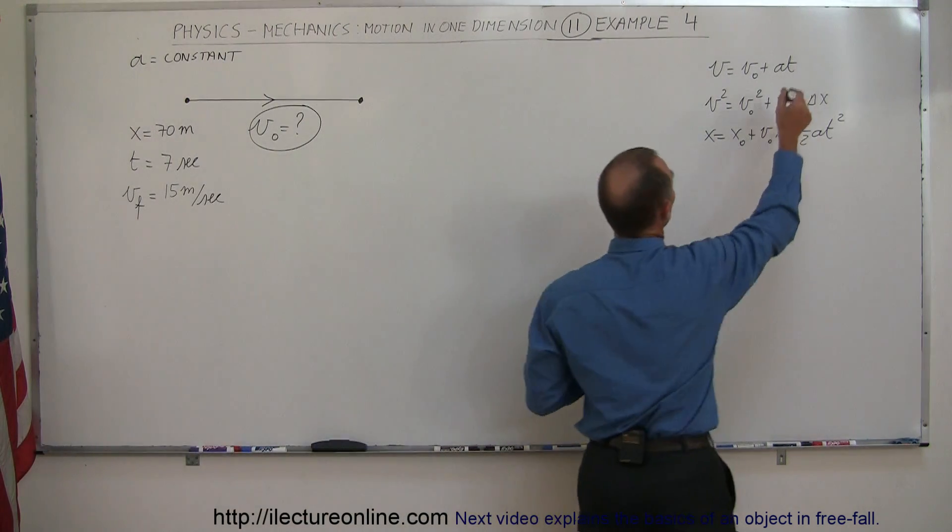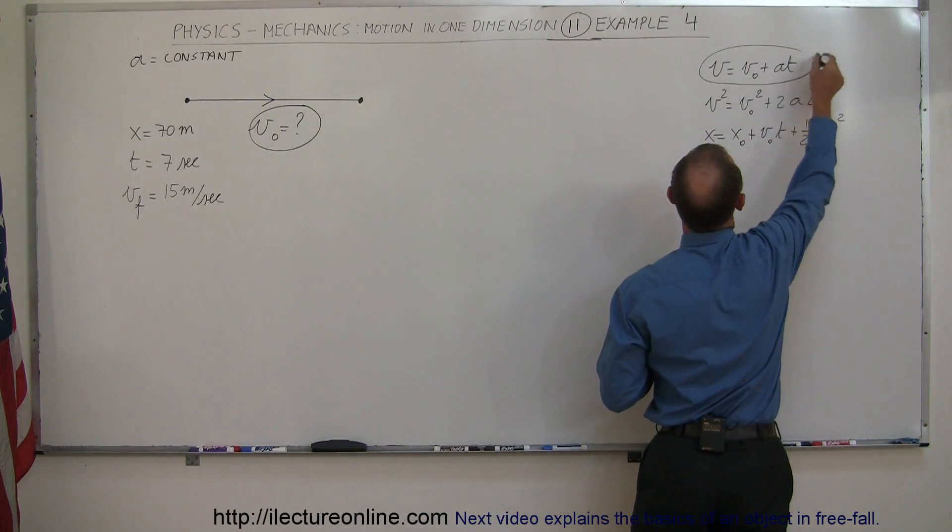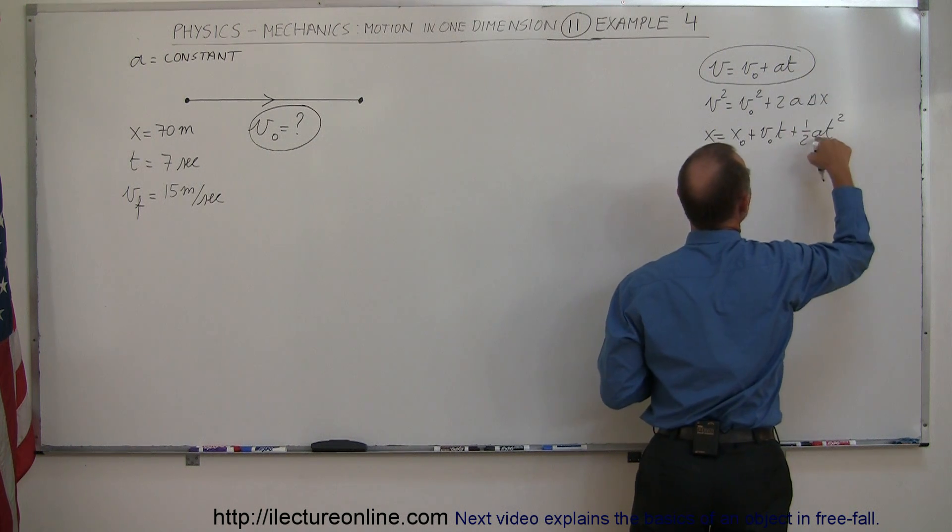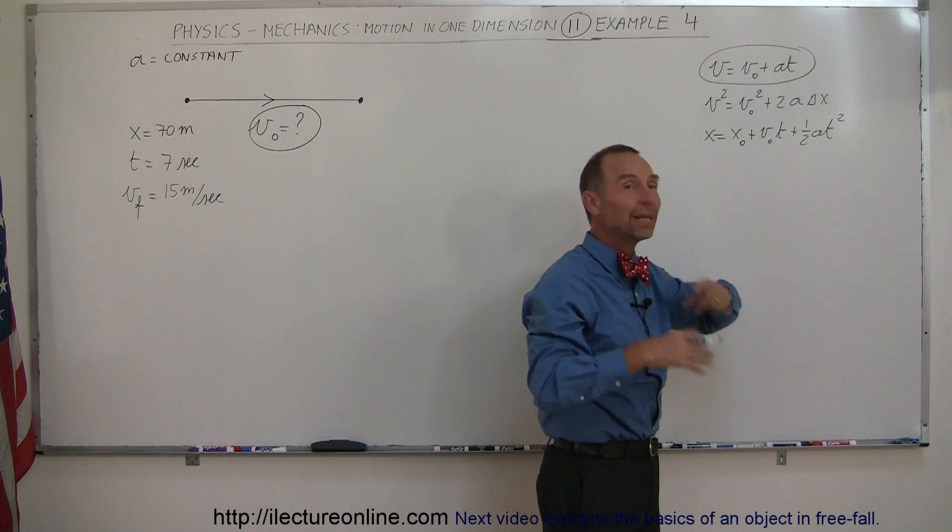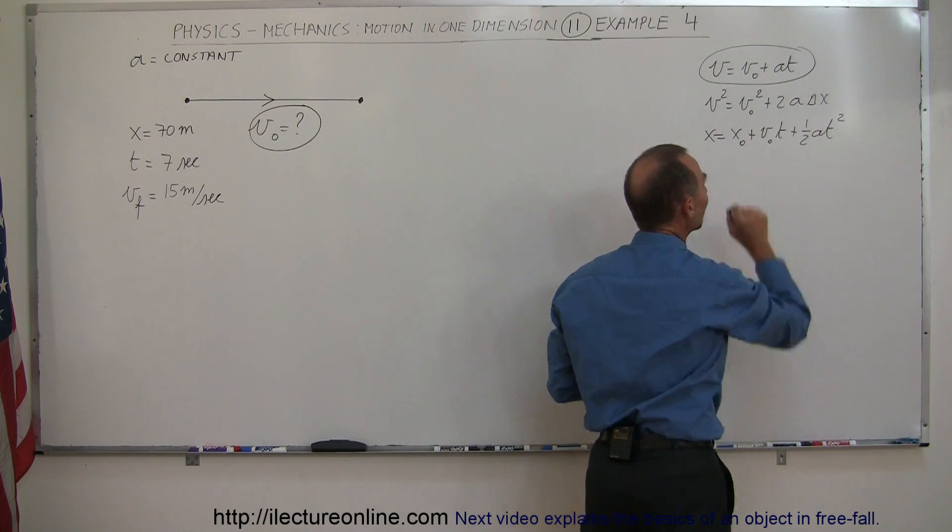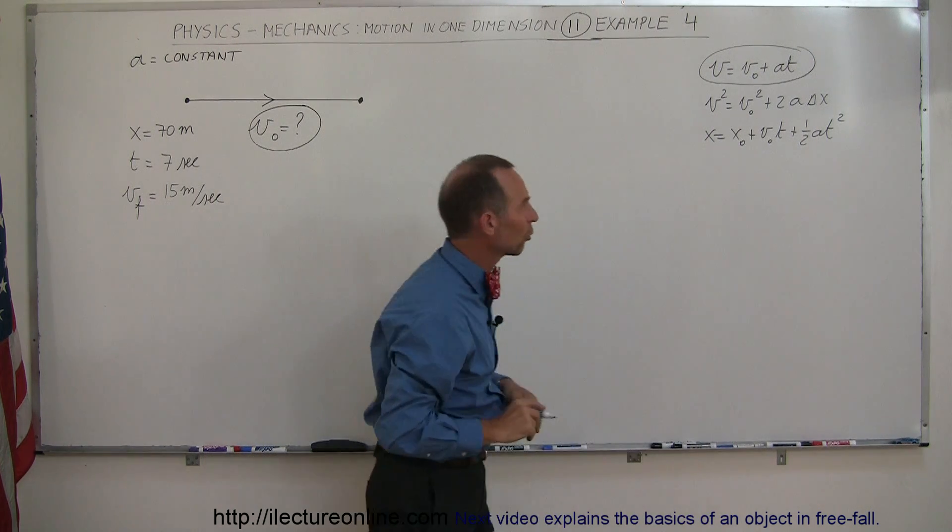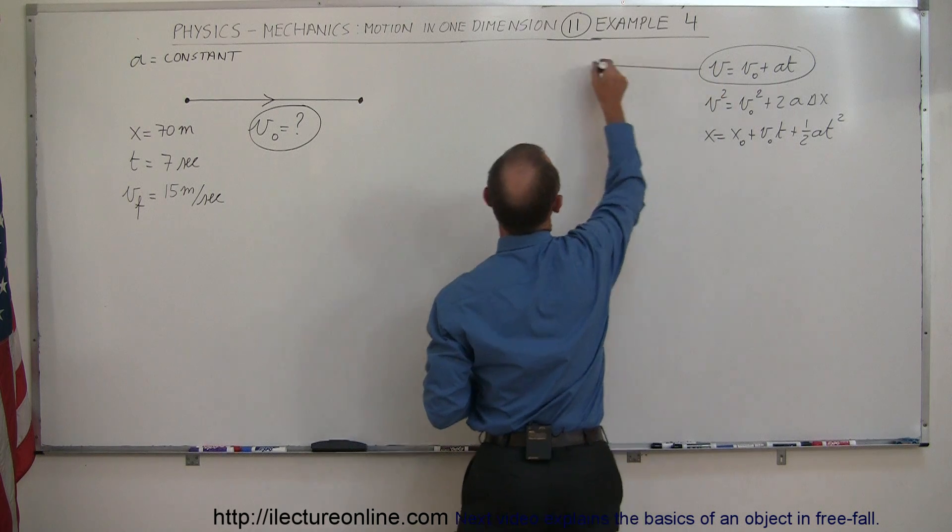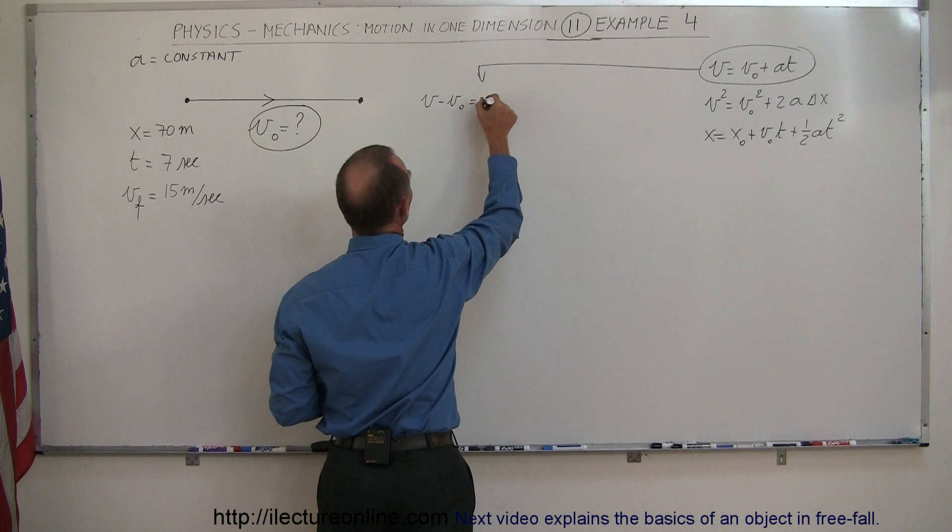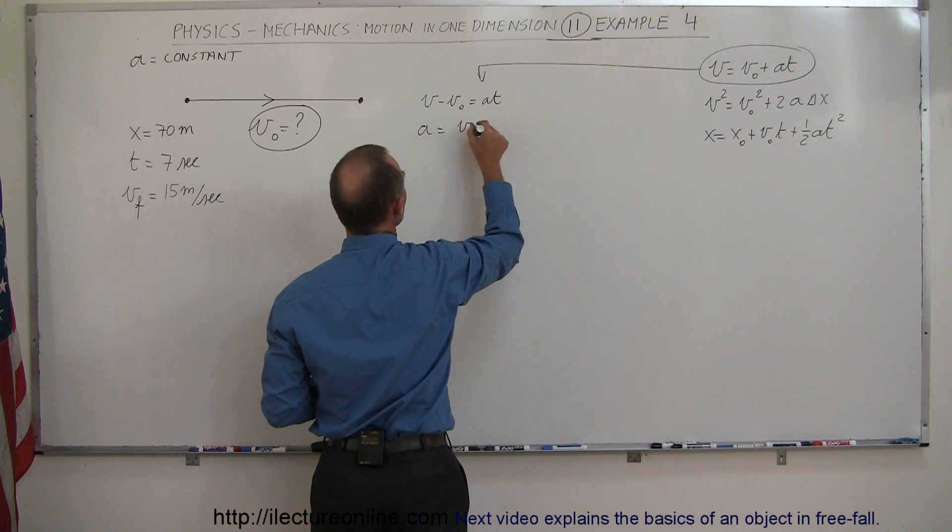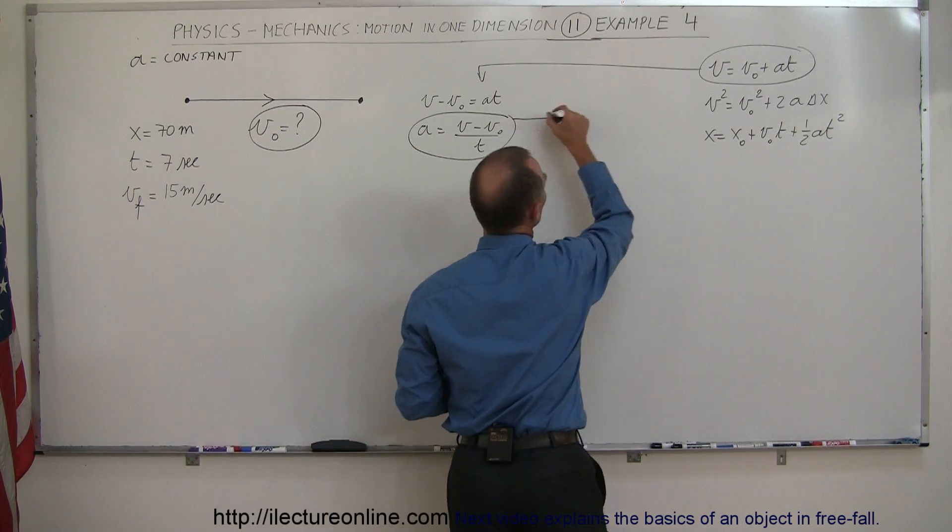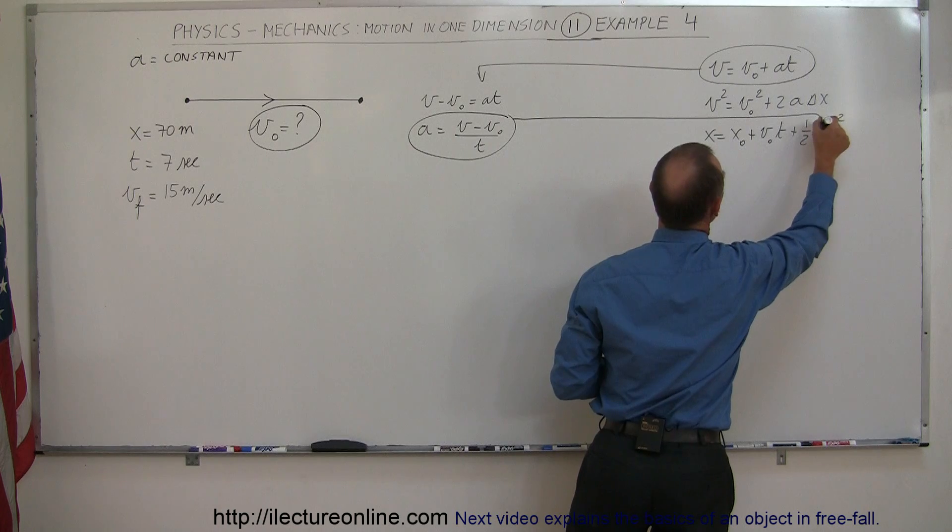So what I could do is I could take the first equation right here and solve this equation for acceleration and plug that equation in there to eliminate acceleration. And then I will only have an equation that has V sub naught as the unknown. So that's the approach. I'm going to take this equation and solve it for A.